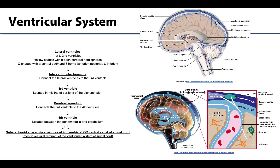There are four ventricles, all connected in a set direction. We start with the most superiorly located, which are the paired lateral ventricles. These could be called the first and second ventricles, but you'll almost always hear them called lateral ventricles. These are spaces within the cerebral hemispheres and have a very distinct C-shape with horns. You have the body as the main portion, then an anterior, a posterior, and an inferior horn of each lateral ventricle.